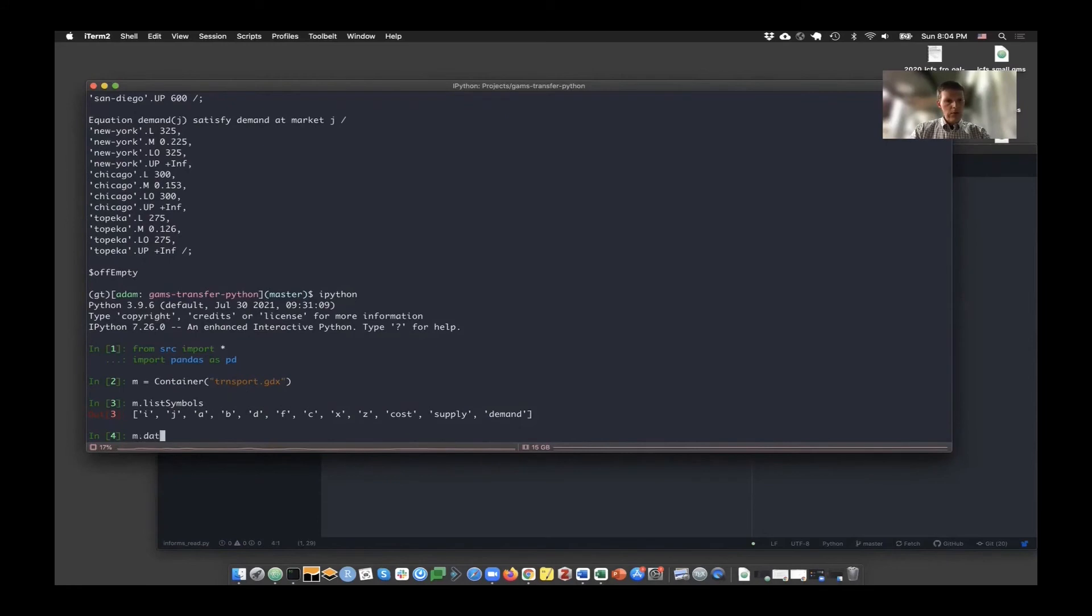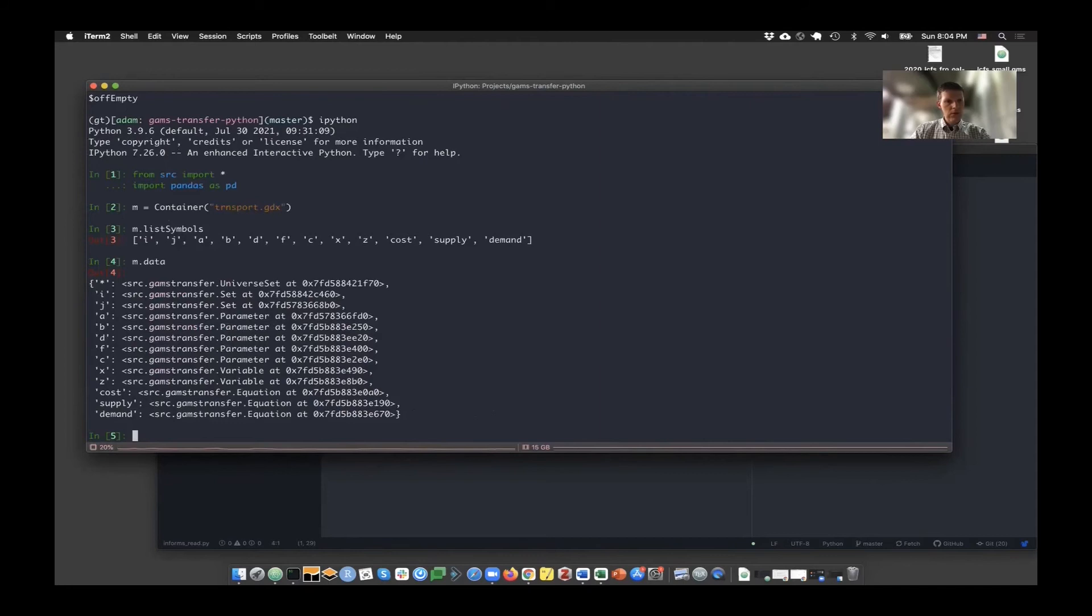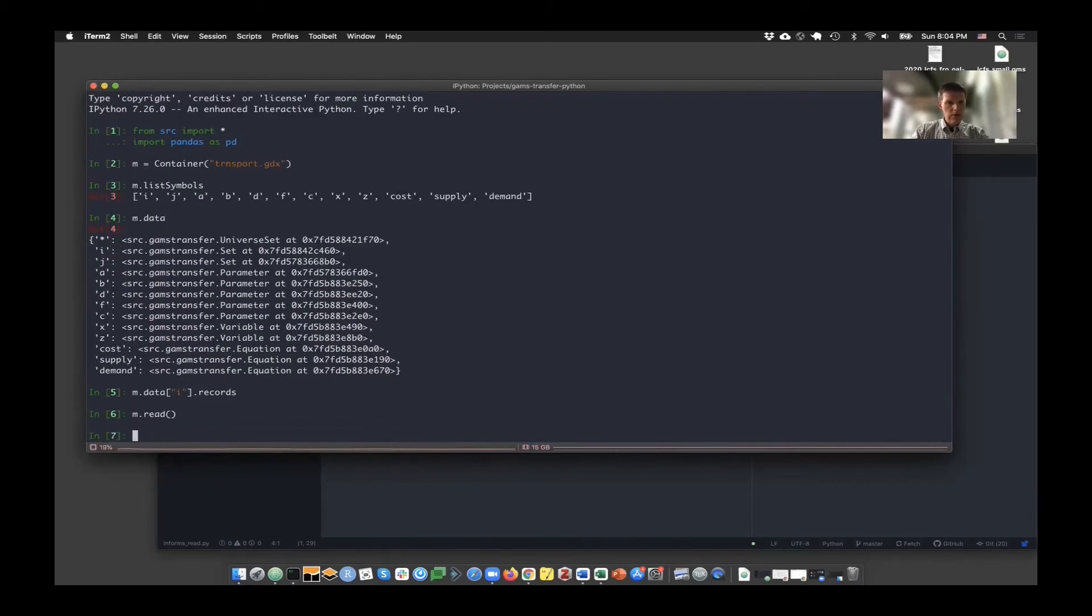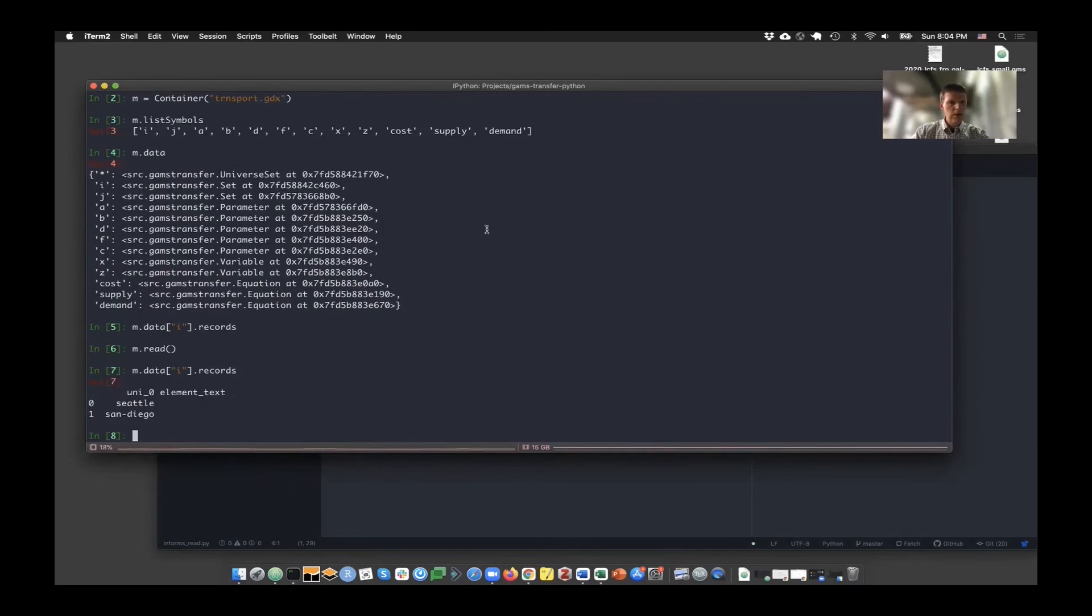m.data, the data attribute, is actually where everything is stored. It's a dictionary, a Python dictionary of all the different symbol objects. So just to be clear about this, let's go ahead and load in set i. And I can look at the records attribute, and you can see that it's empty right now because I haven't loaded anything. So if I just do m.read without anything else, the default is to just read in everything. So I can go through and now read in or look at the records for set i.